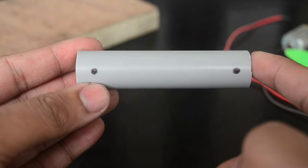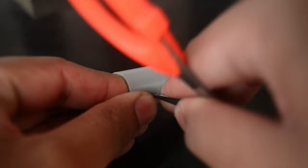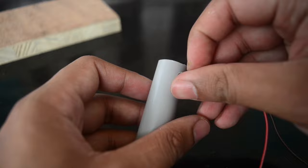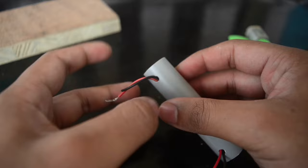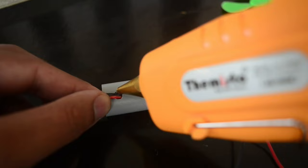At first we'll take a 3 inch plastic tube and make two holes on it using a pair of scissors. Then we'll insert two wires into one hole and pull them out from the other, and fix the two wires in place with some hot glue.